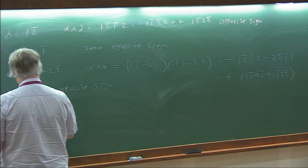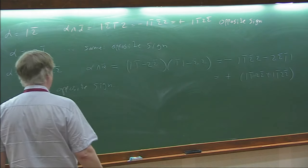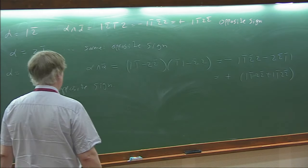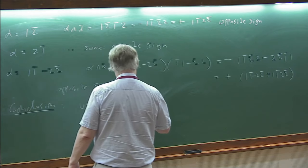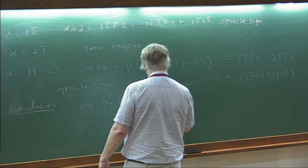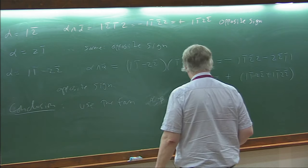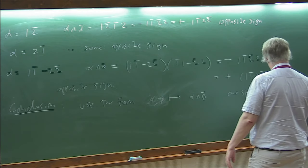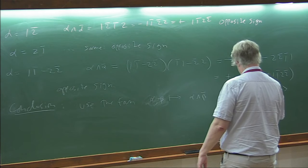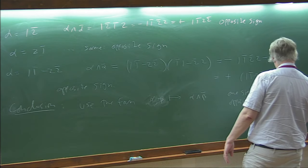The conclusion from this standard calculation is that the bilinear form alpha, beta mapping to the integral of alpha wedge beta bar has one sign on everything generated by omega, and the opposite sign on the primitive part. This is the key sign difference we'll use for what comes next.